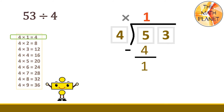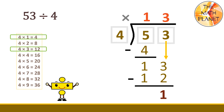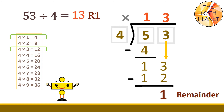And we can bring down the 3, which is the next digit. Now, we got 13 divided by 4. So, we will use the third rule. 4 times 3 equals 12. So, we will write 3 above the 3. Then, multiply: 3 times 4 equals 12. Then, subtract: 13 minus 12 equals 1. Since we don't have any more digits to divide, our remainder is 1. And the answer to this equation is 53 divided by 4 equals 13 with a remainder of 1.